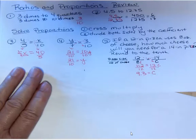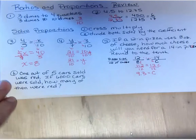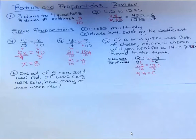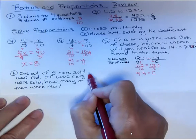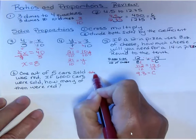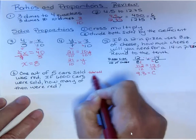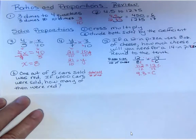Okay, last problem. One out of five cars sold was red. If 6,000 cars were sold, how many of them were red? So what I'm comparing is the total sold to the number of red that were sold. Those are the two things I'm comparing in this problem.